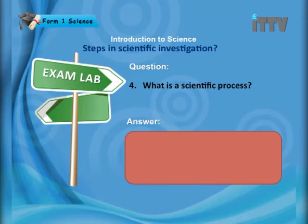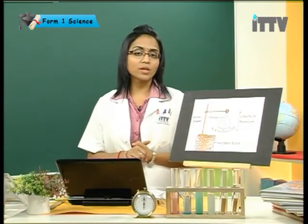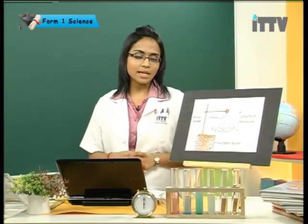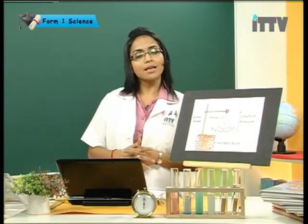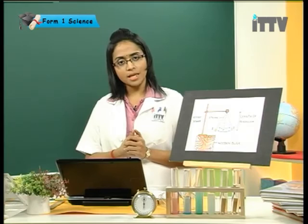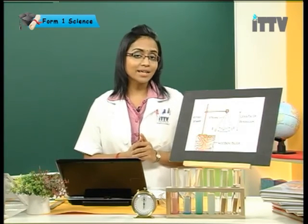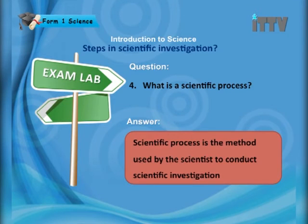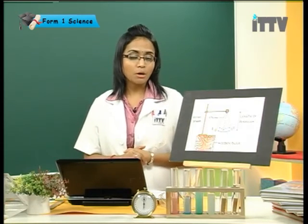Question 4: What is a scientific process? Scientific study involves scientific process and scientific results — the results are what you get at the end of the experiment, while the process is everything you carry out during the experiment. The correct definition is: scientific process is the method used by the scientist to conduct scientific investigation. This includes identifying the problem, knowing the hypothesis, identifying the variables, collecting data, and so on. This is basically all you need to know about today's lesson.